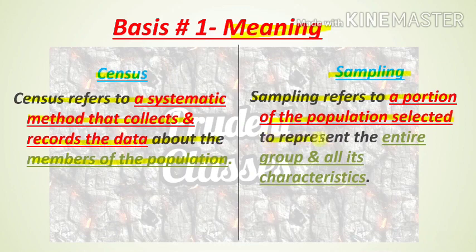Now let's talk about sampling. Sampling refers to a portion of the population selected to represent the entire group and all its characteristics. In sampling, a portion of the total population is selected which will represent that particular group and show its characteristics. In census, data about all the members of the population is collected and recorded.